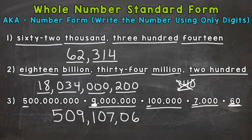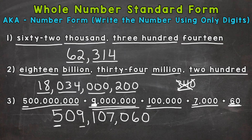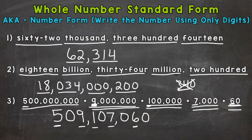That's our last number in the expanded form, but we need to wrap it up with a zero in the ones — we don't have anything with a value in the ones place. Double checking: the five has a value of 500,000,000; the nine has a value of 9,000,000; then 100,000; nothing in the 10,000s; a seven with a value of 7,000; nothing in the hundreds; a six with a value of 60; and nothing in the ones, so we fill it with zero. So our answer is 509,107,060.